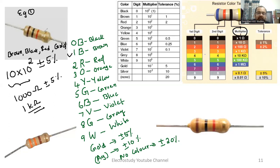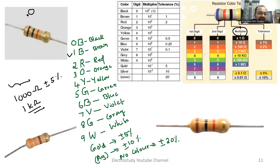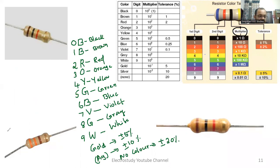I think it's clear to everyone. Likewise, I request you all to calculate the value of resistance for the second example by using the color code. Please check the second example — Example 2. Now tell me what is the color, starting from the extreme left.